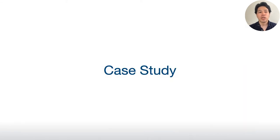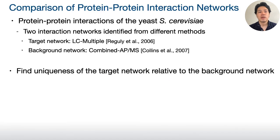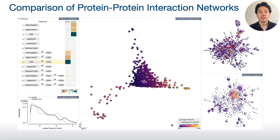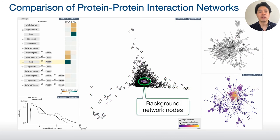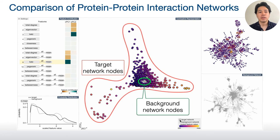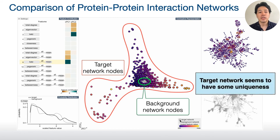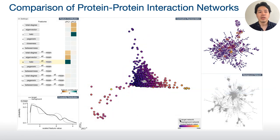Now, I will demonstrate one representative case study. In this case study, we compare two protein-protein interaction networks. Both networks represent the same protein interactions, but they are identified through a different method. From these two networks, we will find the uniqueness of the target network. We first highlight background network nodes and can see them only around the center. On the other hand, target network nodes are widely distributed. From this difference in scatteredness, we can say that the target network seems to have some uniqueness.